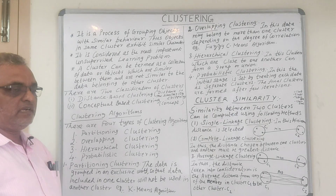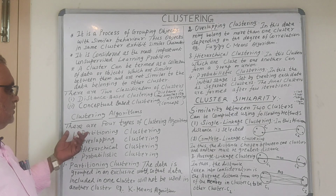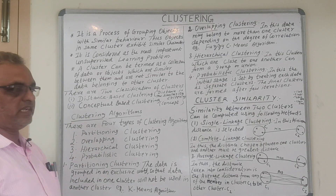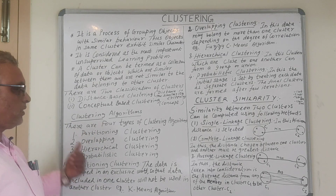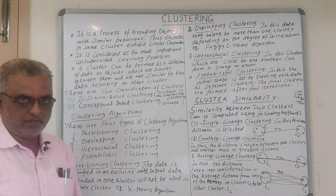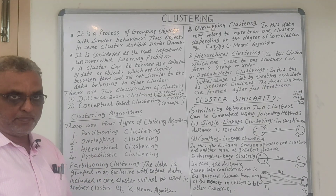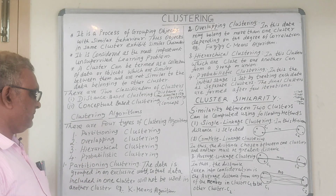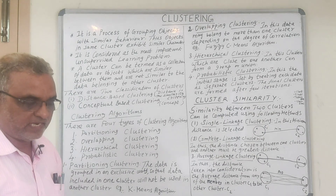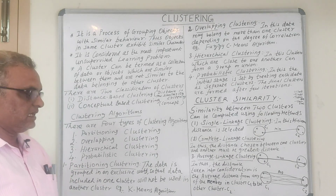There are four types of clustering algorithms. Number one, partitioning clustering. Number two, overlapping clustering. Number three, hierarchical clustering. Number four, probabilistic clustering.